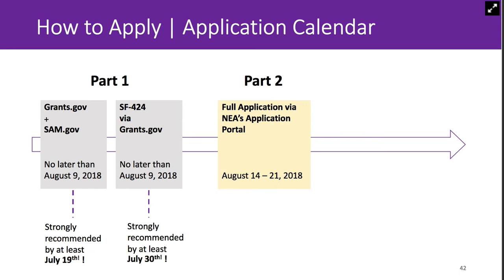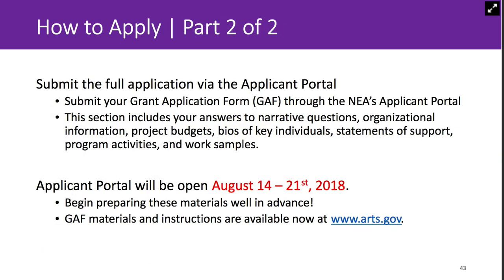Now let's talk about Part 2, where you'll complete the NEA Our Town application through the NEA's applicant portal. That system will be open for one week, beginning August 14th and open through the 21st. This is the more substantial part of the application, where you'll actually tell us about your project, your organization, the partners involved, the project budget, etc. You'll also upload statements of support and work samples through this site. We call this part the Grant Application Form, or GAF. Even though the applicant portal doesn't open until August 14th, you are certainly encouraged to begin preparing your application materials very well in advance, so that all you'll need to do during that week is plug in your materials.